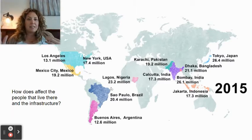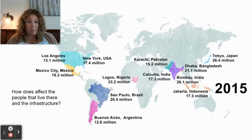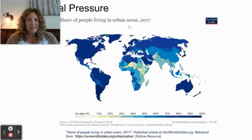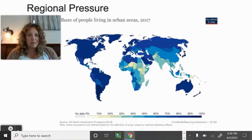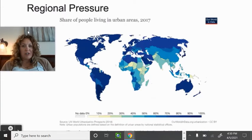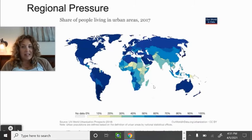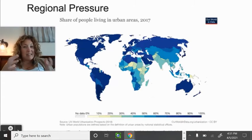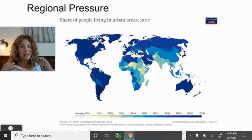If a city grows super fast, can roads, schools, hospitals, and sewage systems keep up with that growth? Looking at the share of people living in urban areas in 2017, the darkest blues show the majority living in urban areas. There are still pockets of sub-Saharan Africa, the Middle East, and Southeast Asia that are more rural, but the vast majority of the world lives in urban areas.